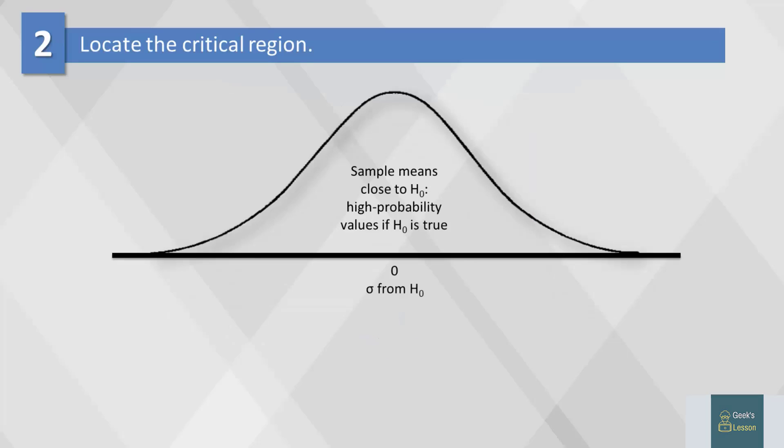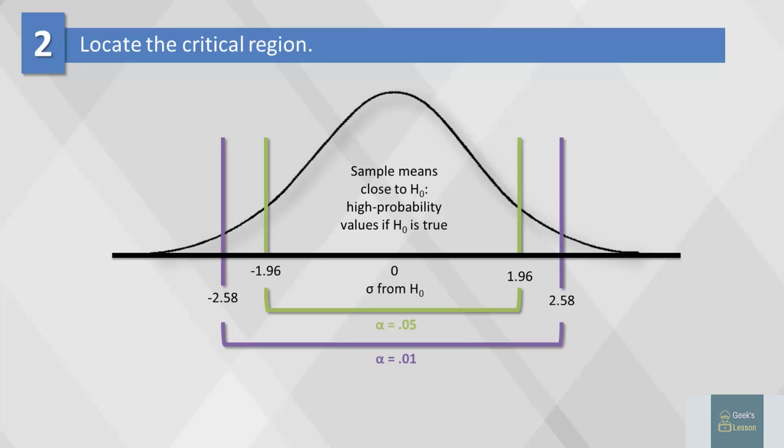These are the locations of the critical region boundaries for three different levels of significance: alpha equals .05, alpha equals .01, and alpha equals .001. Note that boundaries get wider as the critical value falls.